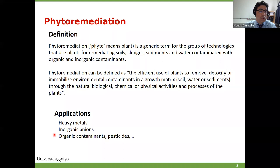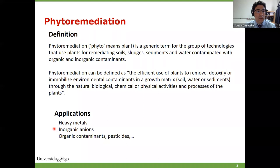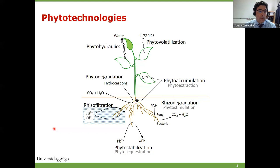One option is phytoremediation, which is considered a sustainable remediation technology that uses the capacity of green plants for the removal of contaminants. Phytoremediation is able to remove low or moderate concentrations of contaminants — heavy metals, organic contaminants, pesticides, inorganic anions — any kind of contaminants can be removed with the right application of the technology. So it is appropriate for the remediation of mixed contaminated sites.